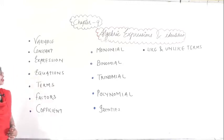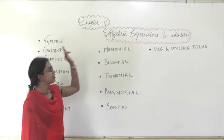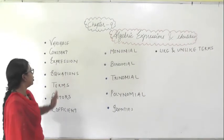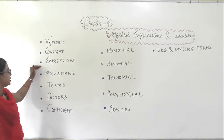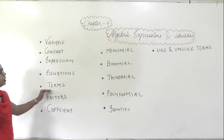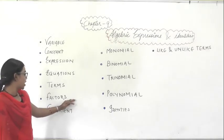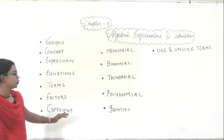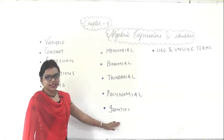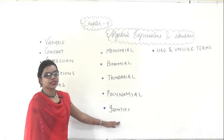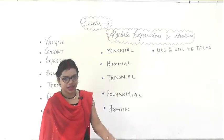Good morning. We are going to study Chapter 9, Algebraic Expression and Identity. In this chapter, we are going to study about what is variable, what are constants, what are expressions, equations, what are the basic terms used in algebraic expressions, how to find out the factors, what is known as coefficient, monomial, binomial, trinomial, polynomial, and the basic identities. And lastly, like and unlike terms.